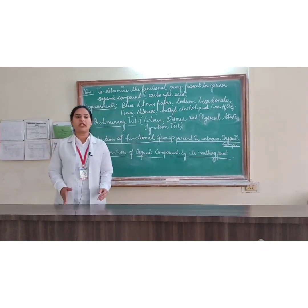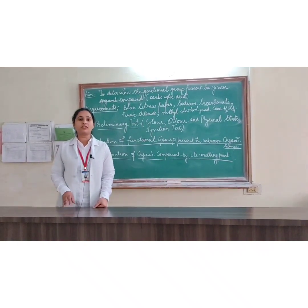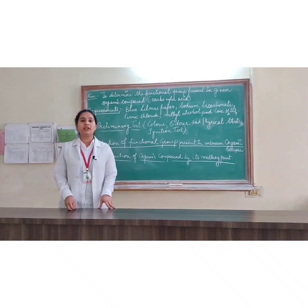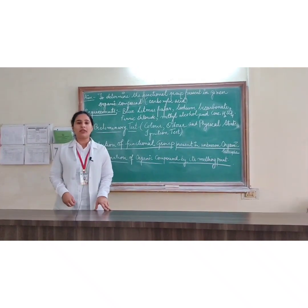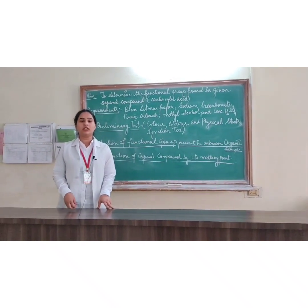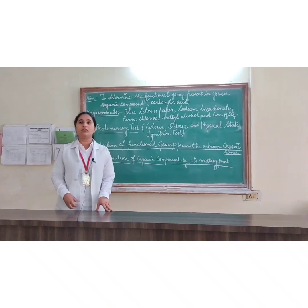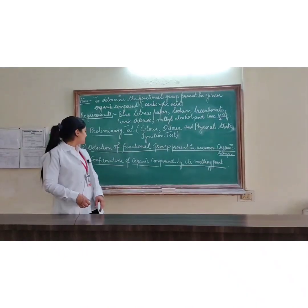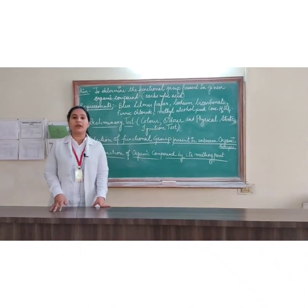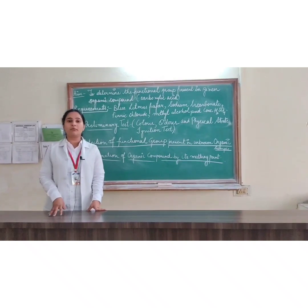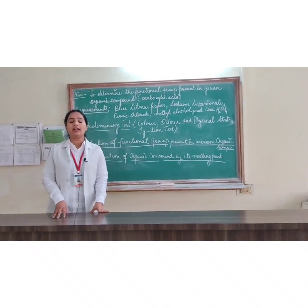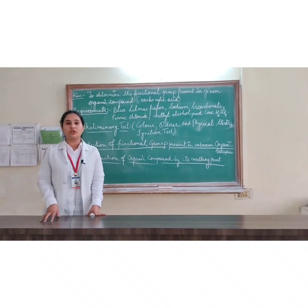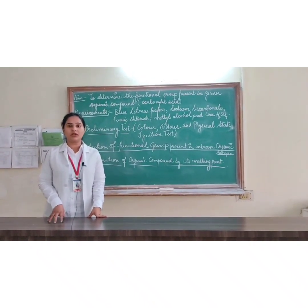This experiment consists of three steps. The first step is the preliminary test, in which we examine the physical state of the compound. In the next step, we determine the functional group present in the given compound, and in the third step, we confirm the functional group present in the given compound.